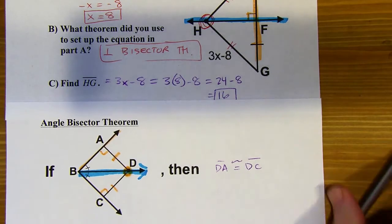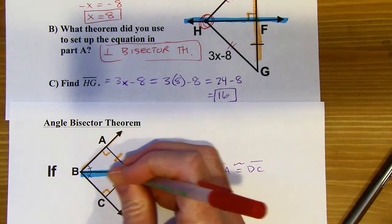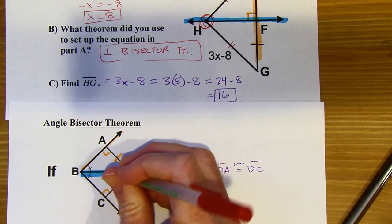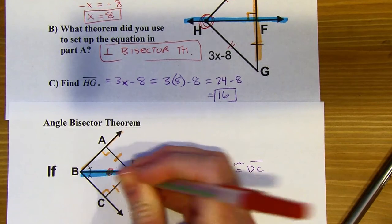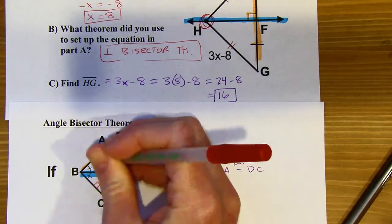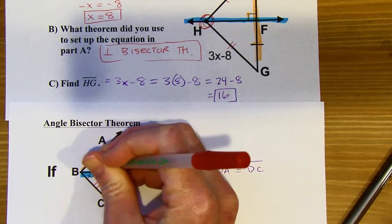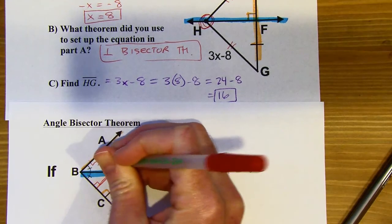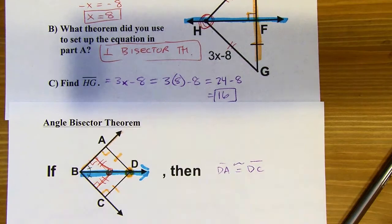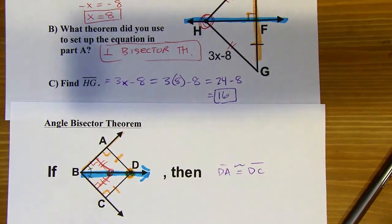You can use this with any point on an angle bisector. If I choose any point randomly on that bisector, this distance and this distance have to be congruent. Any point on that angle bisector will work.